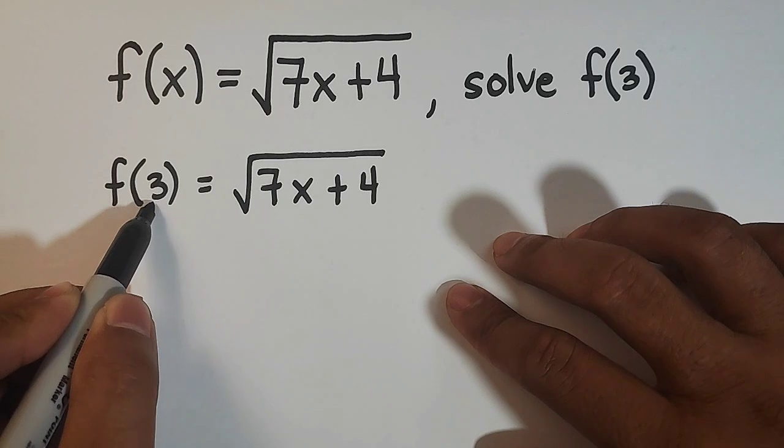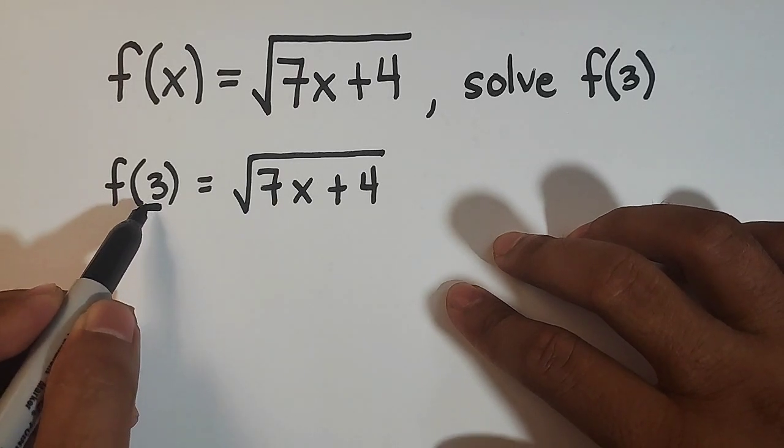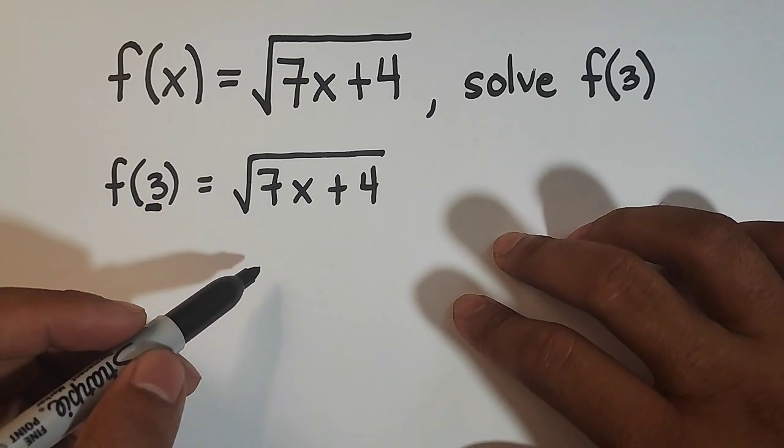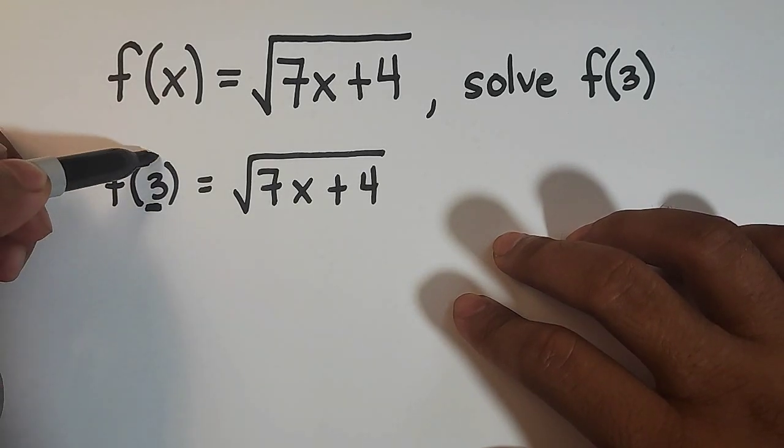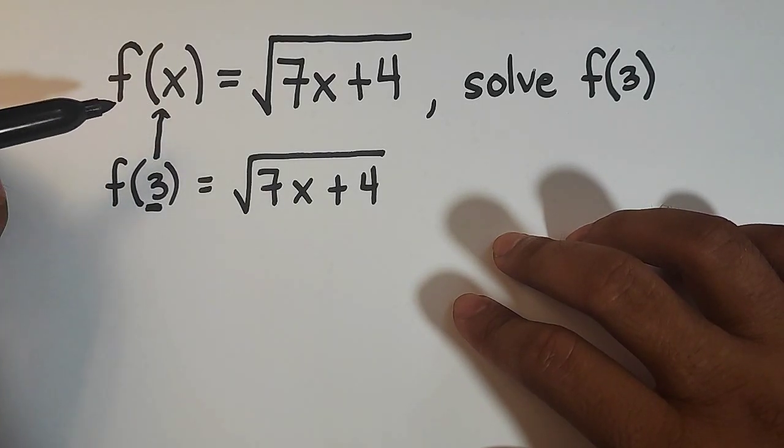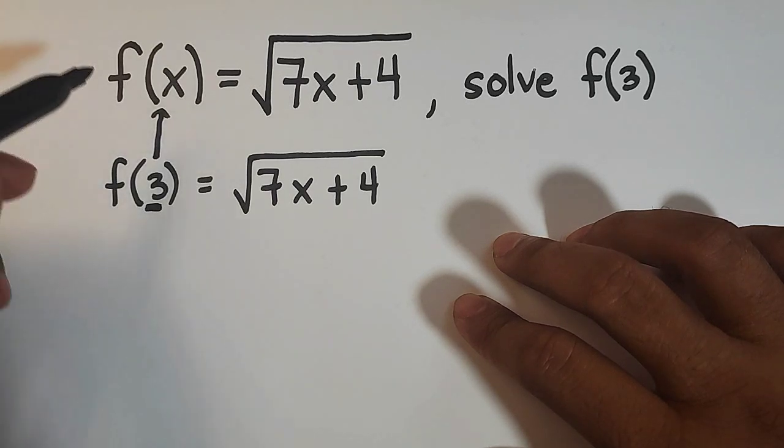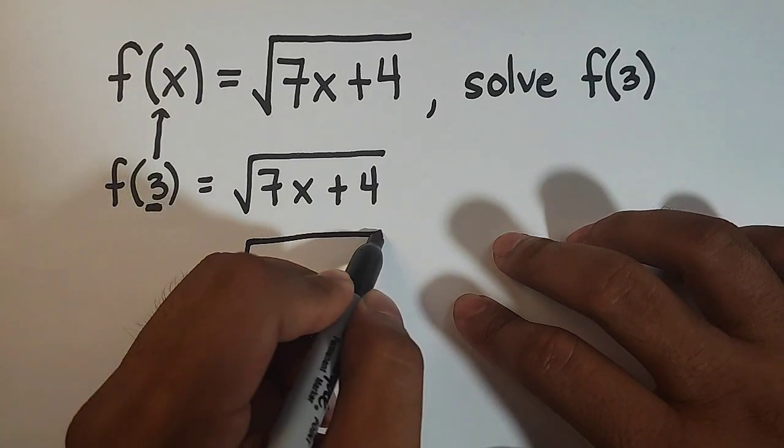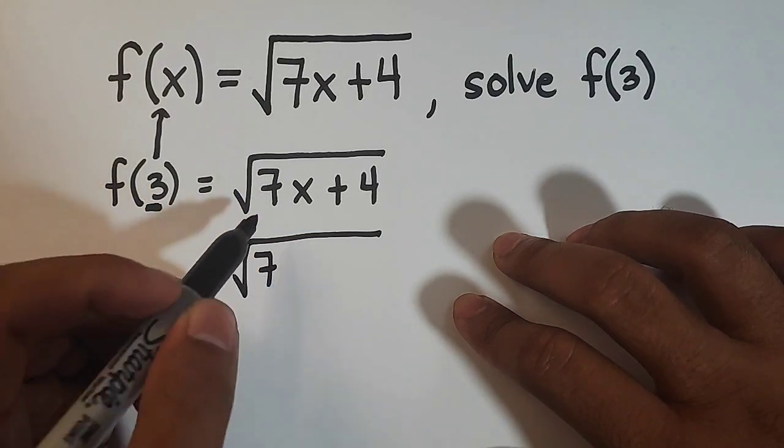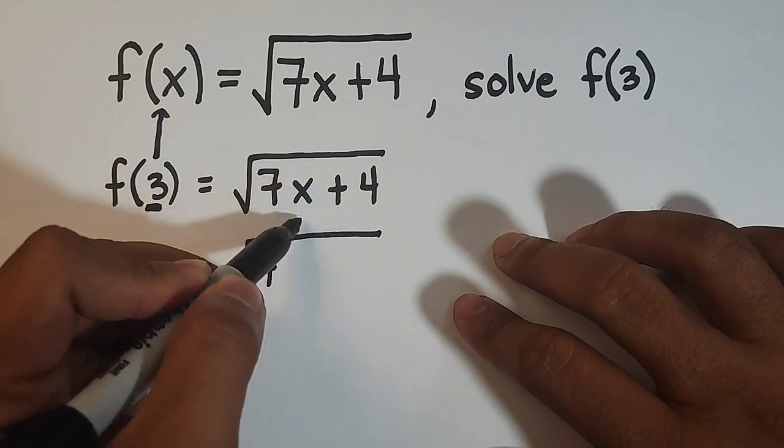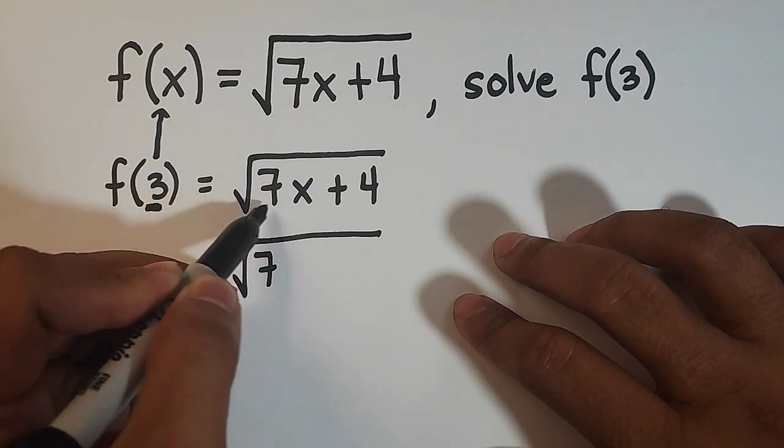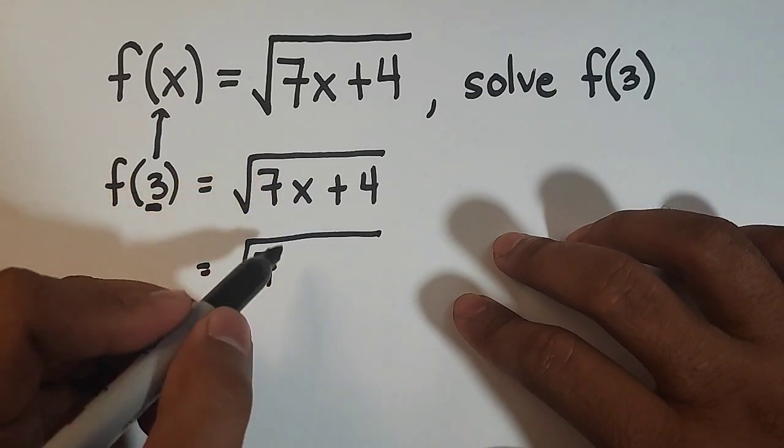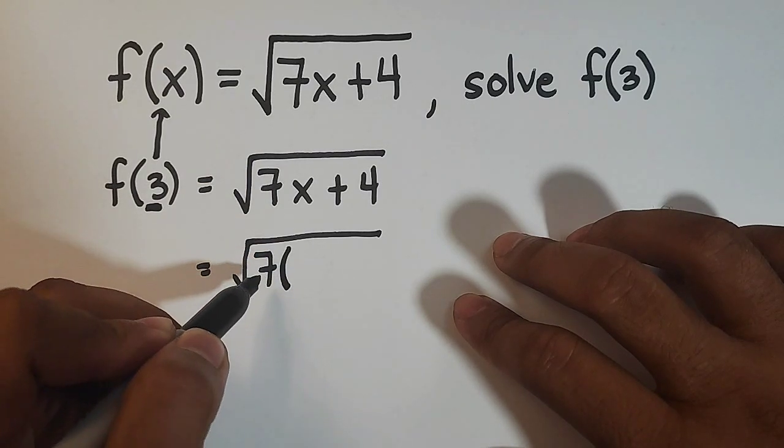So what's the purpose of 3 here? This will serve as your input, or in other words, the value of x. And as you can see, this one corresponds to your x as input. So what will happen is that you need to copy this radical sign, 7, and then replace or substitute 3 to replace the variable x here by writing it like this: 7 times 3 plus 4.